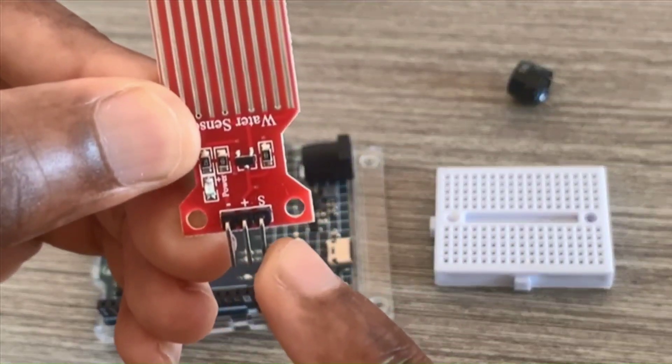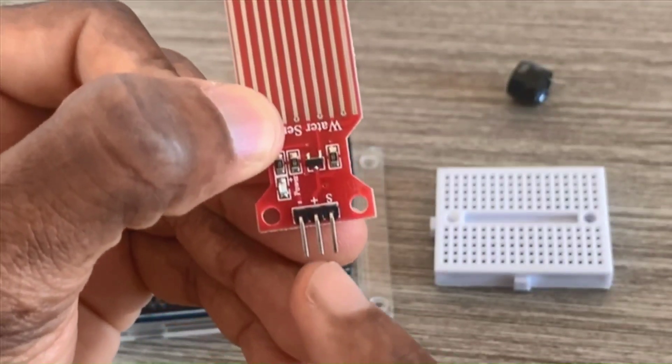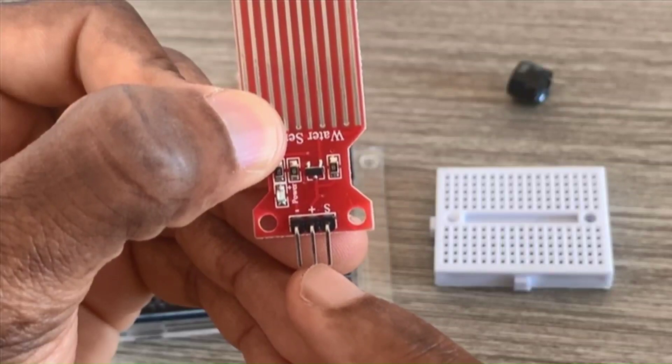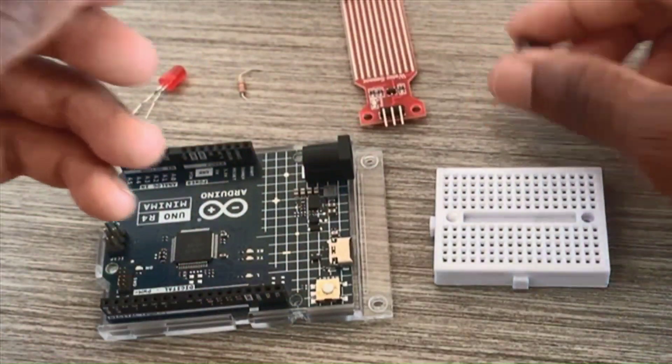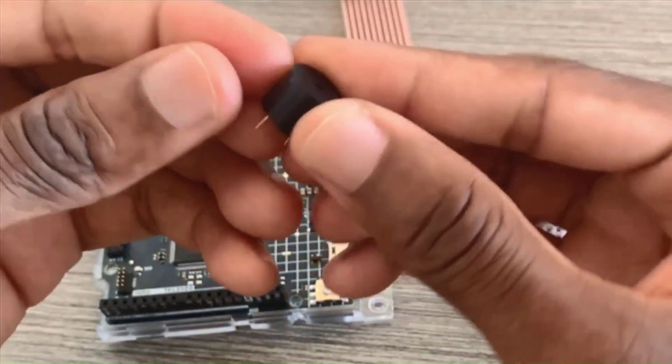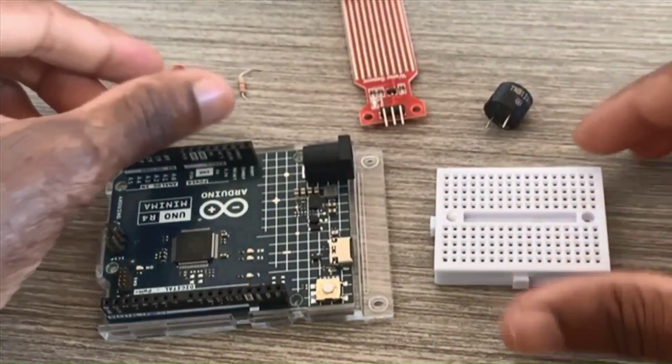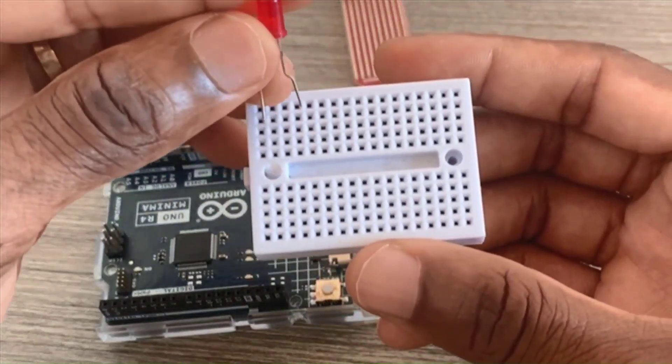The water sensor has three pins: the first one is the signal pin or data pin, the middle pin is the VCC, and the minus is the ground pin. For this alarm system project, we need a buzzer and we also need this LED.